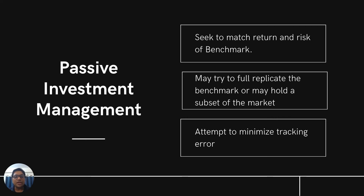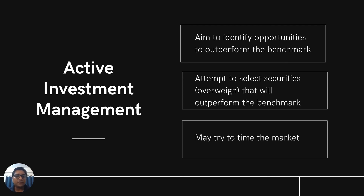However, in case of the sample strategy, if the sample does not reflect the population — which is the benchmark — then there might be some deviation. That's why there will be some tracking error. Passive investment managers always attempt to minimize the tracking error. The tracking error is the difference between your portfolio's return and the benchmark return. We calculate it by taking the differences between the benchmark return and the portfolio's return and calculating the standard deviation of those deviations.